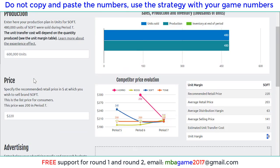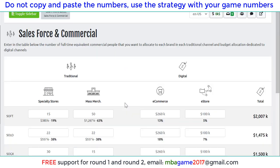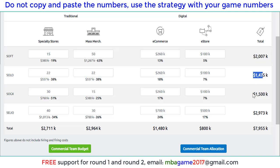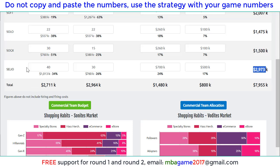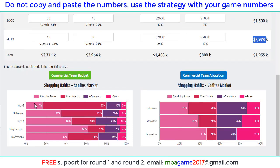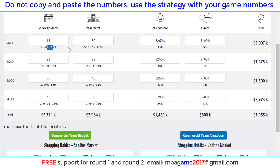For the sales force decisions, we can check the total budget here — the total budget depends on the sales and profit of each product, as shown in the first video in the finance part. For example, Soft focuses on Gen Z, so we see the allocation here for Soft across four channels: specialty store, mass merchandise, e-commerce, and e-store.